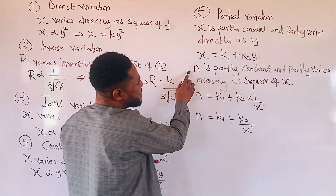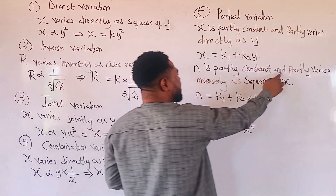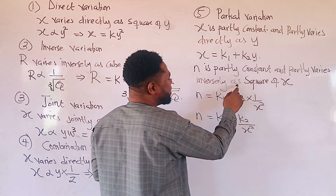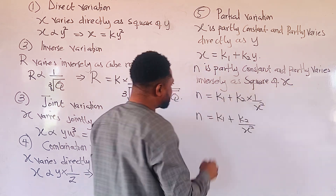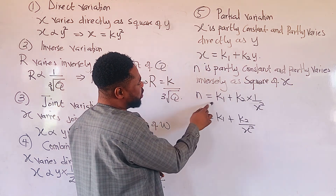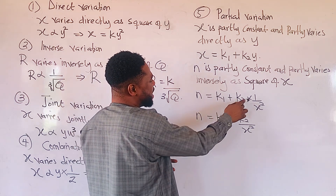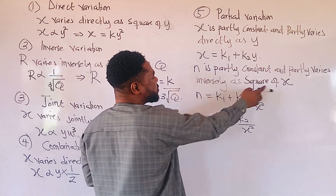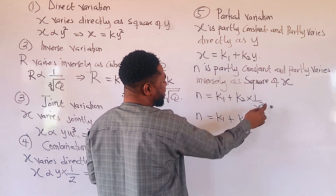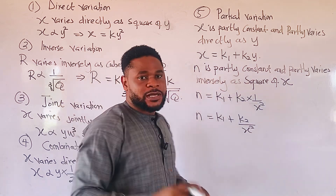Let us look at the second example. n is partly constant and partly varies inversely as the square of x. So we have n equal to k1 plus k2 multiplying 1 over the square of x, giving us this result.